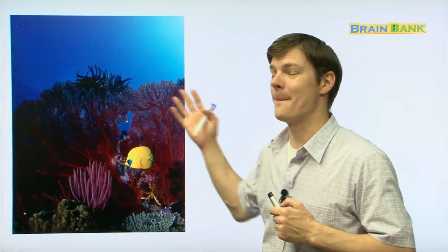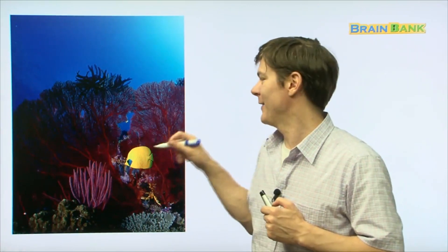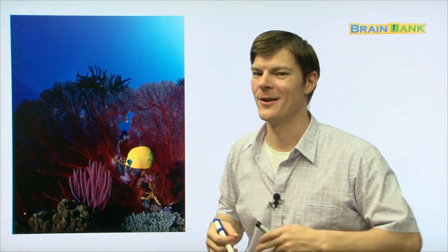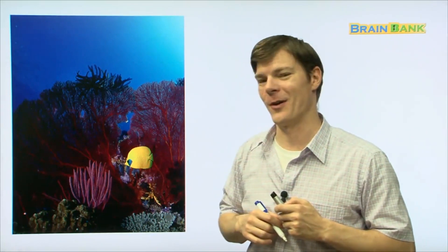Here's our friend swimming in the Big Blue Sea. And do you see these red things around him? These are called sea fans. And they are a type of coral. Alright, let's go on.